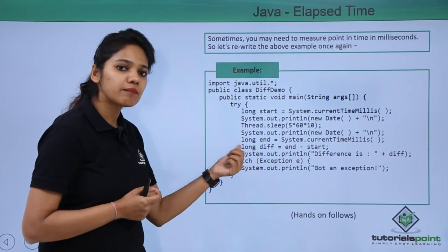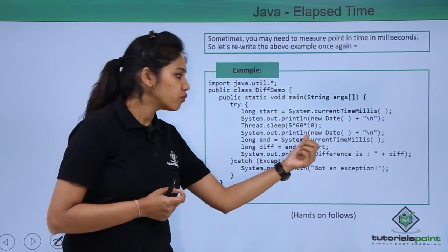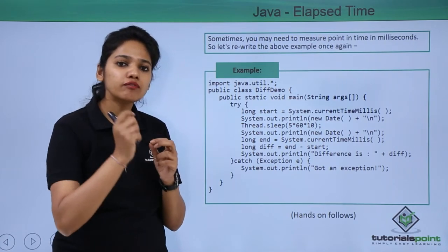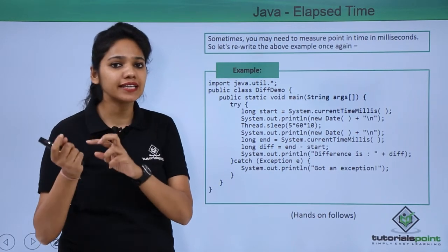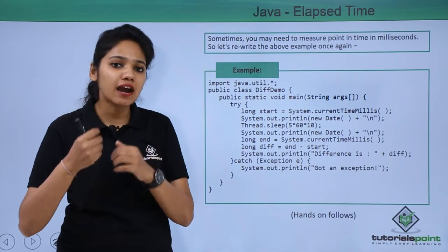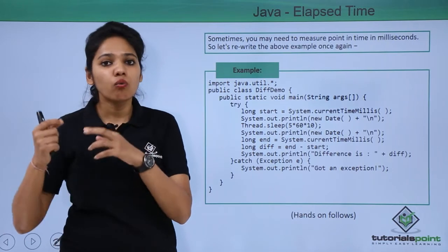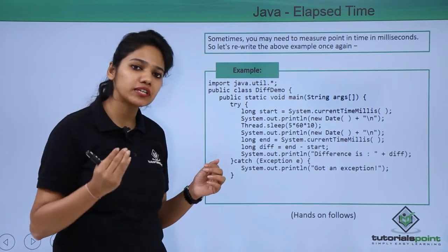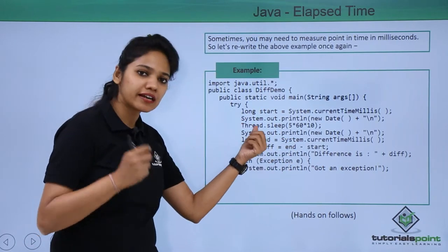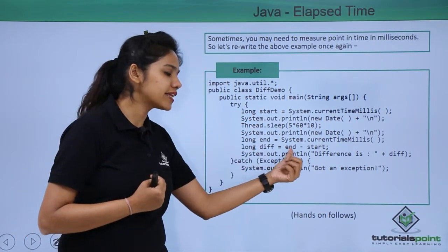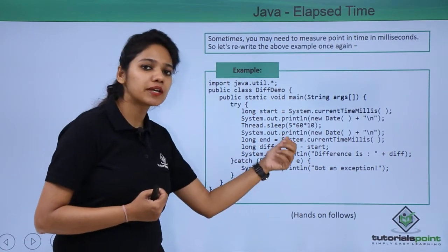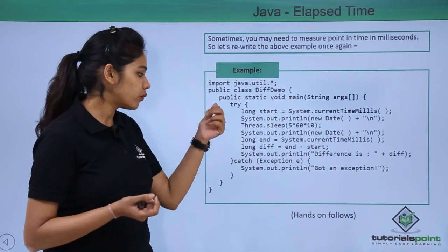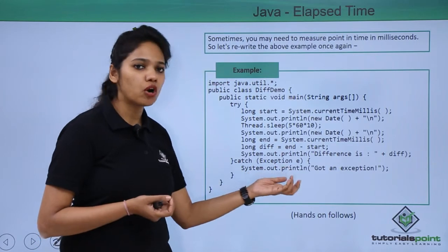We create a variable of data type long with the variable name 'end'. After three seconds, we get the milliseconds from the system and store them. For example, if the time is 1:15 and 45 seconds with 10 milliseconds, after three seconds it becomes 48 seconds with perhaps 11 milliseconds — the difference between these is what we want. To find the difference, we subtract start from end: end minus start, and store it in a long variable. We then print the difference of milliseconds. Any exception is handled in the catch block.